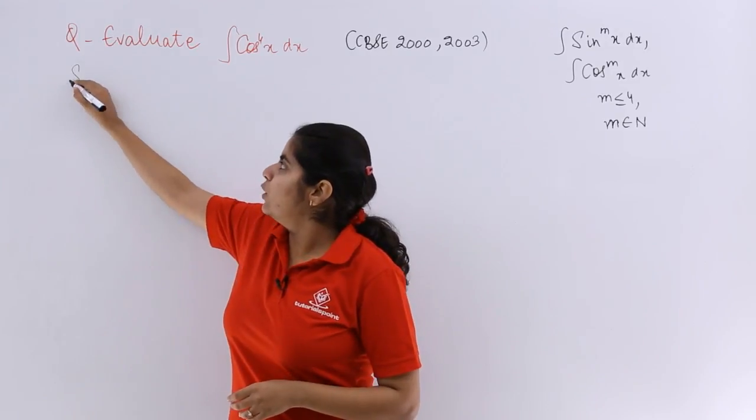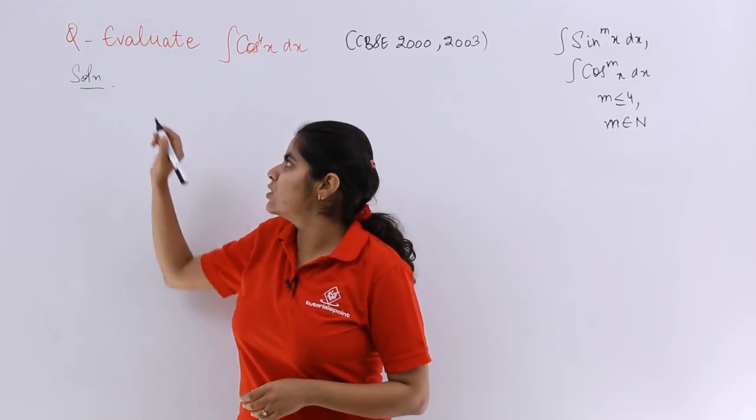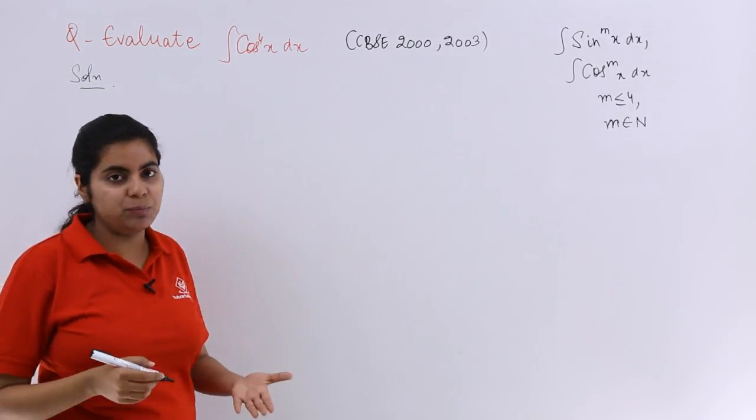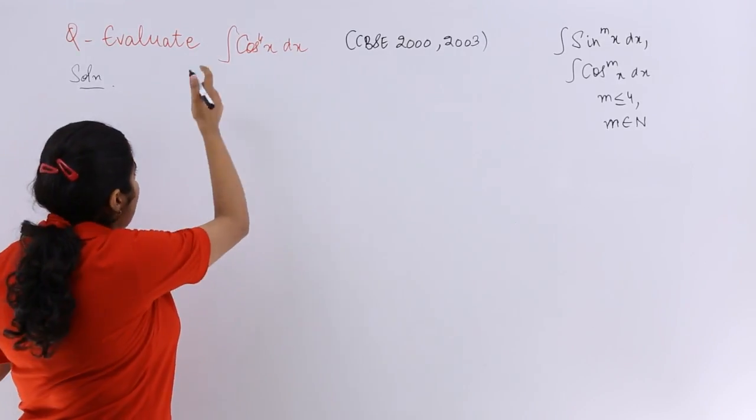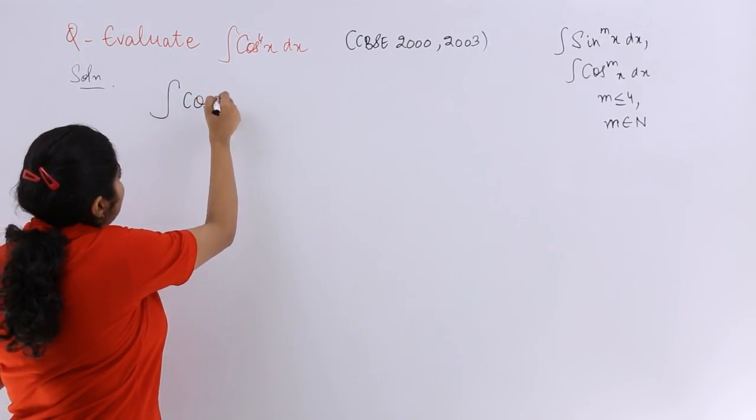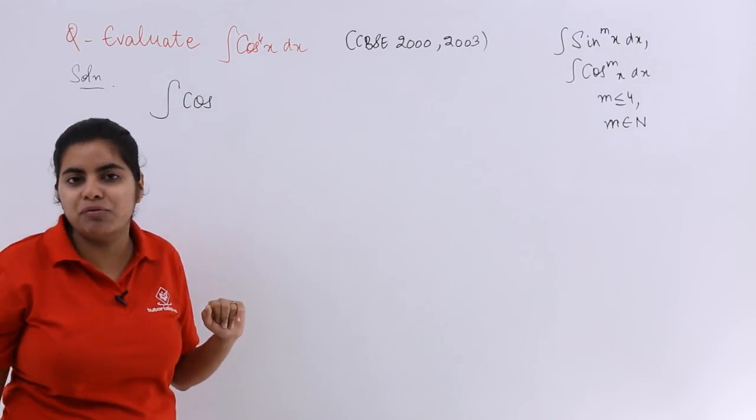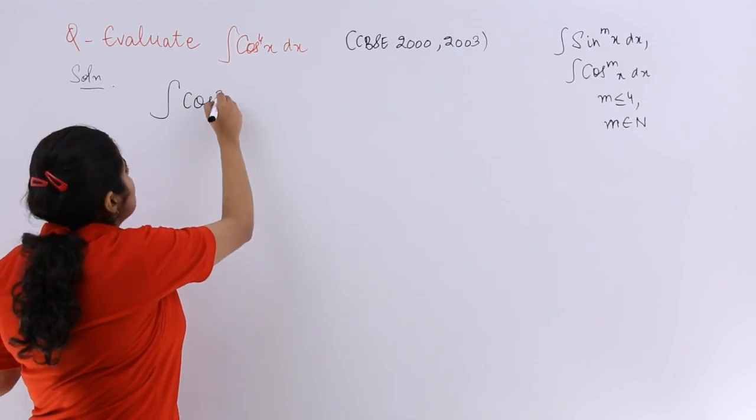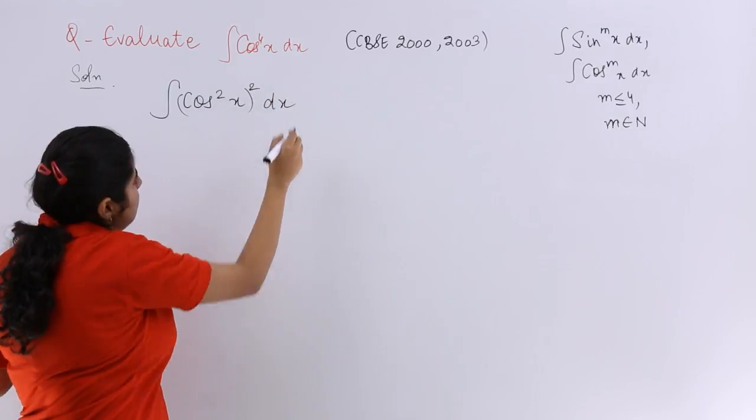So now I know that in these type of questions, I have to use the formula wherever possible for cos 2x. So how to break up this cos raised to the power 4x? It can be written as cos square x whole square dx.